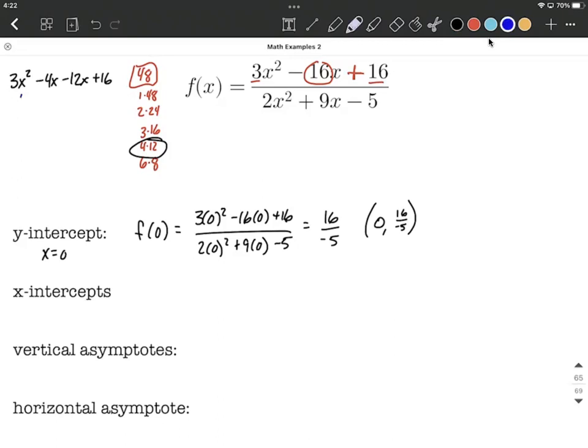Now we have 4 terms, so think factor by grouping. Group the first two terms together and say what do they have in common? In this case, it's going to be an x. If I factor out an x from each of those first two terms, we get 3x minus 4 inside a set of parentheses. For factor by grouping to work, what's in that first set of parentheses has to be the exact same as what's in the second set.